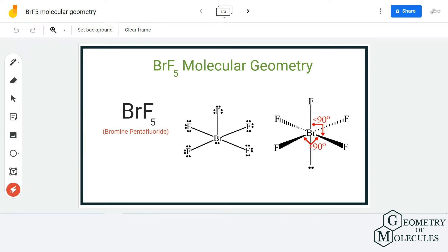If you look at its Lewis structure, bromine atom is in the center and fluorine atoms are forming bonds with bromine atoms like this, and there is one lone pair of electrons on the central atom over here.